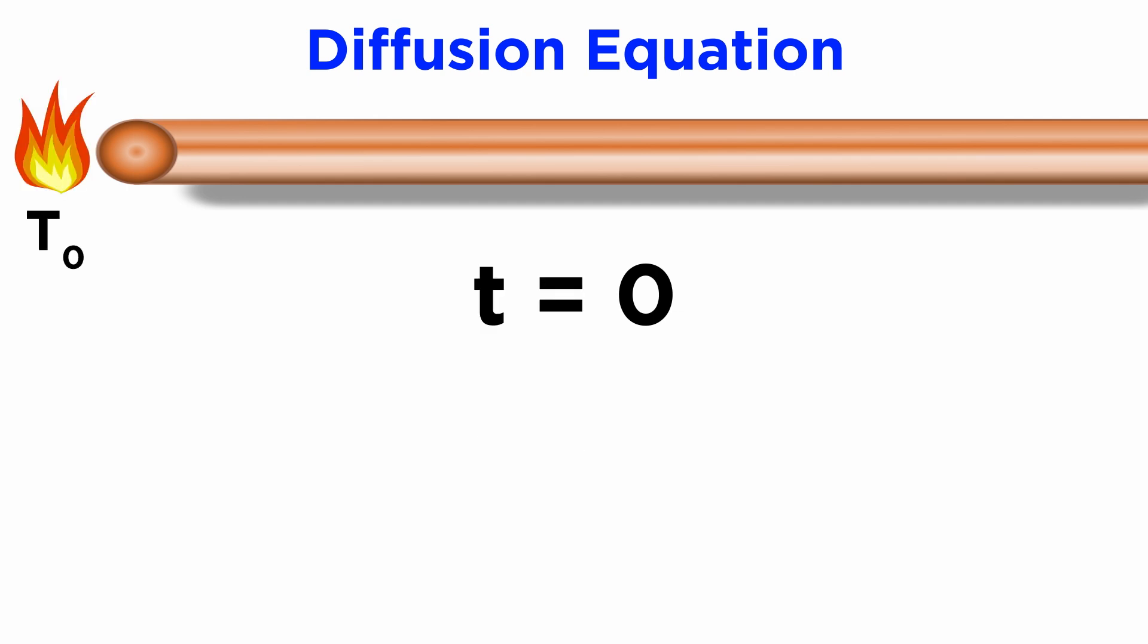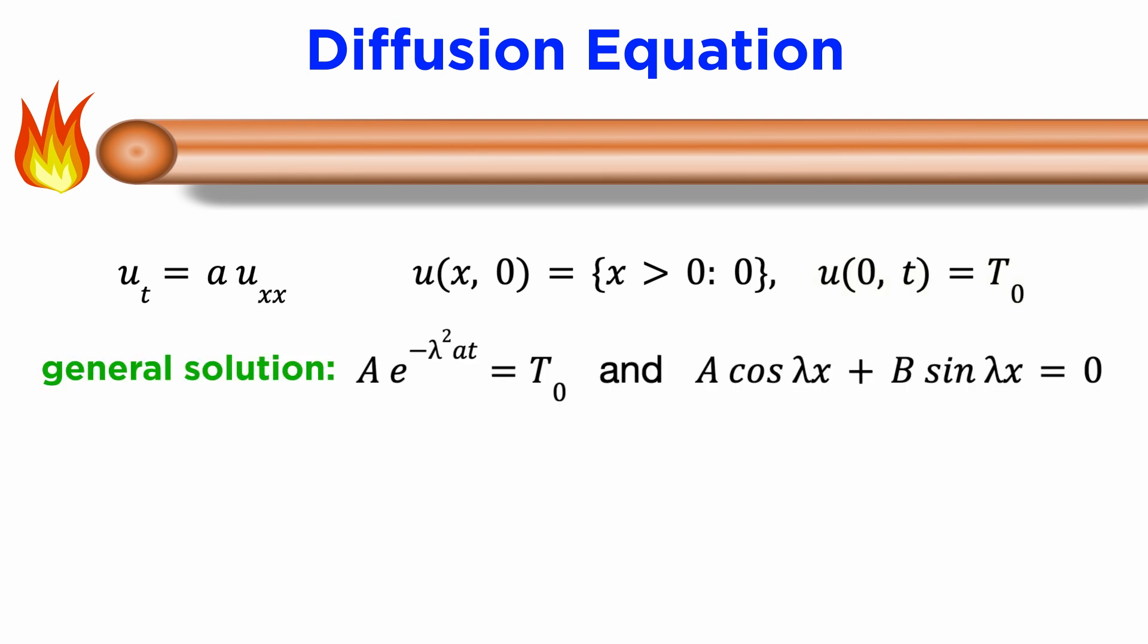At t equals zero, we place a hot object at some fixed temperature T_0 in contact with the rod at x equals zero. Our initial condition u(x,0) is therefore a step function of size T_0, and our boundary condition is that u(0,t) is equal to T_0, since the hot block has a fixed temperature.